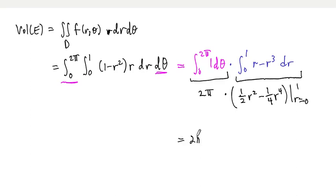And so just a little computation here tells us that we have our final answer is two pi times one half minus a quarter. That's just another quarter, right? So this ends up being just pi over two. And so that's the volume bounded underneath that paraboloid that opens downward, but sitting above the xy plane.